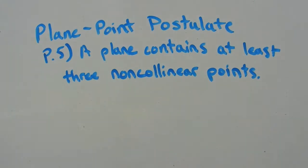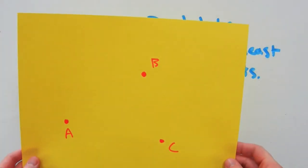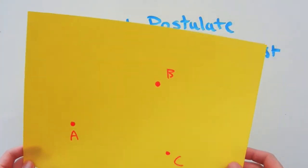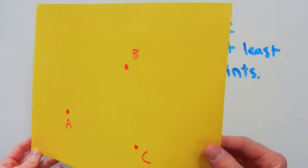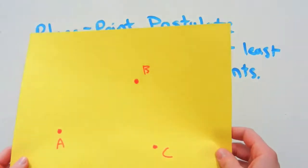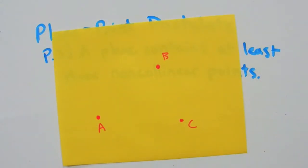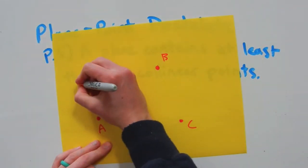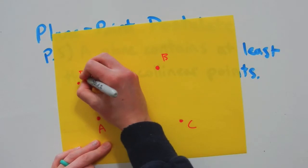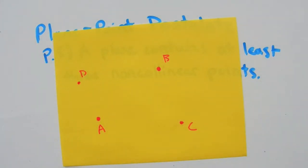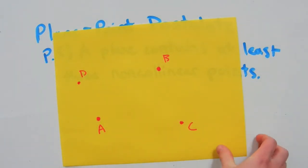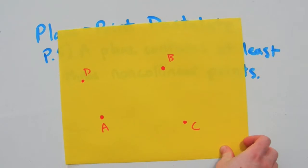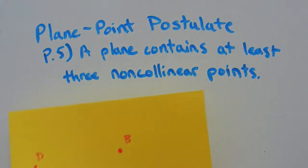We know this to be true because you need at least three non-collinear points to create a plane. You can have more than three points — we can make another point, point D — but you must have at least three non-collinear points. And that is the plane point postulate.